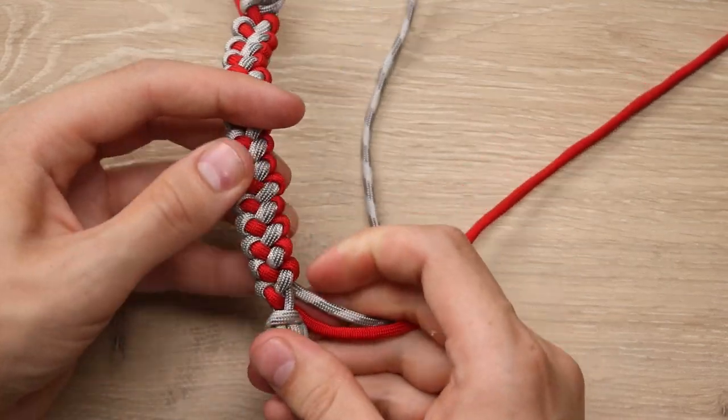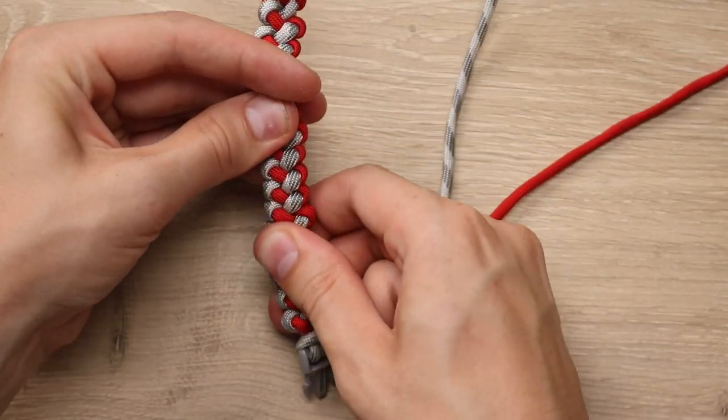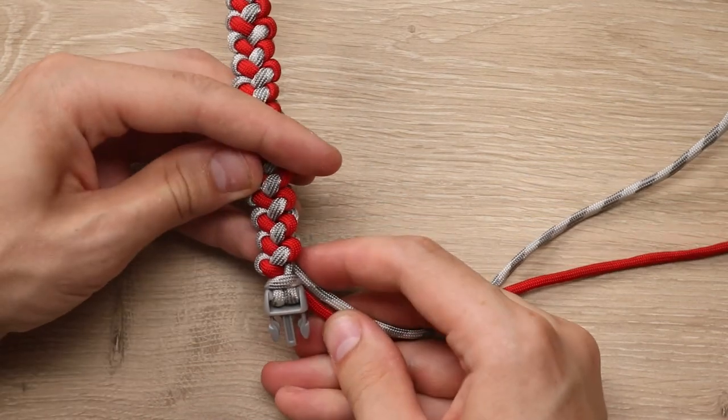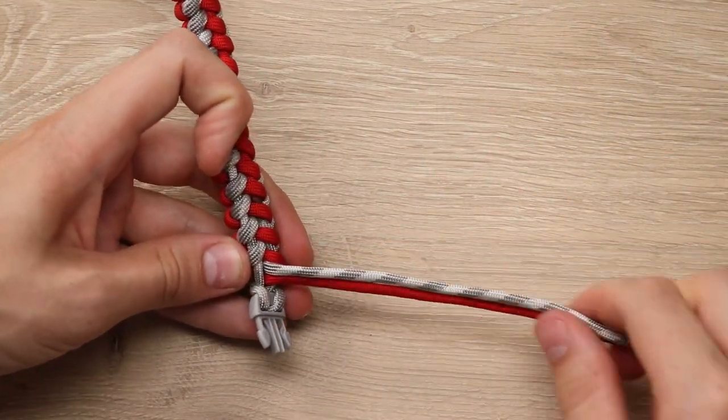There we go, we'll pull that one nice and tight, so that it lays nice on top, and we'll just clip it on the bottom, and melt it against like usual.